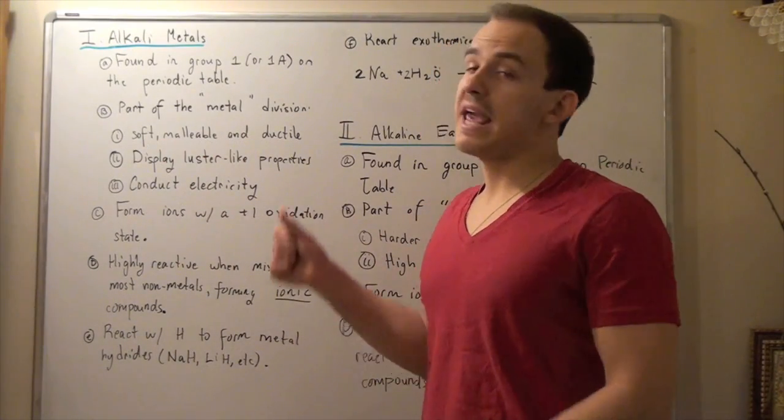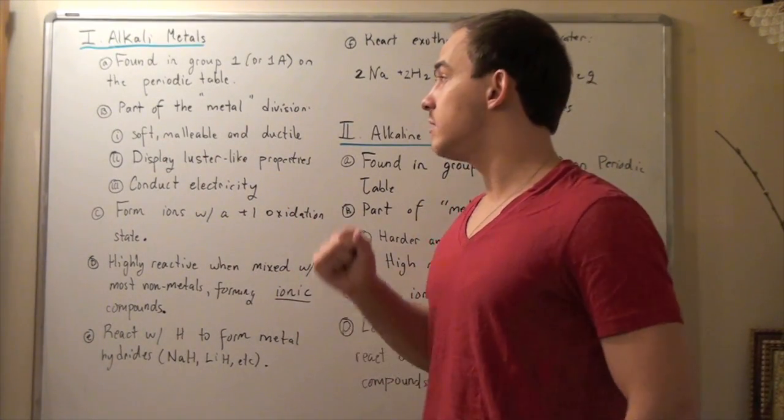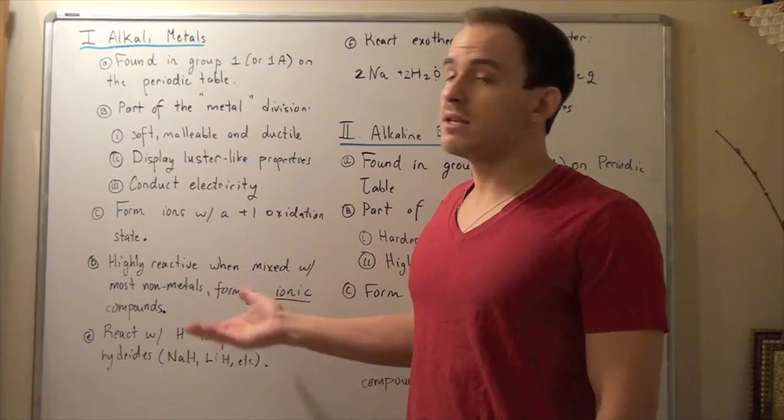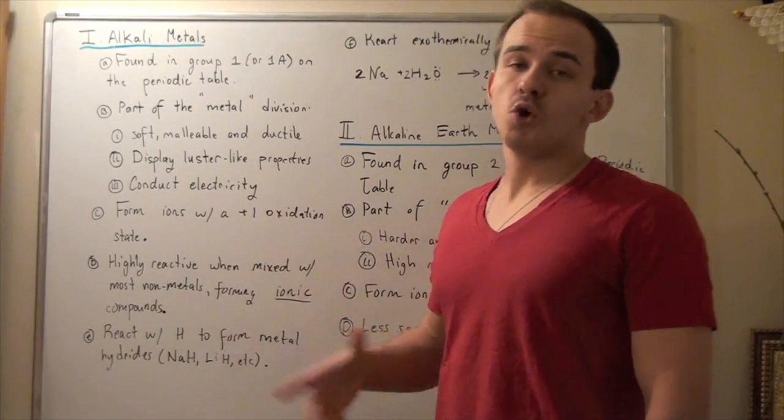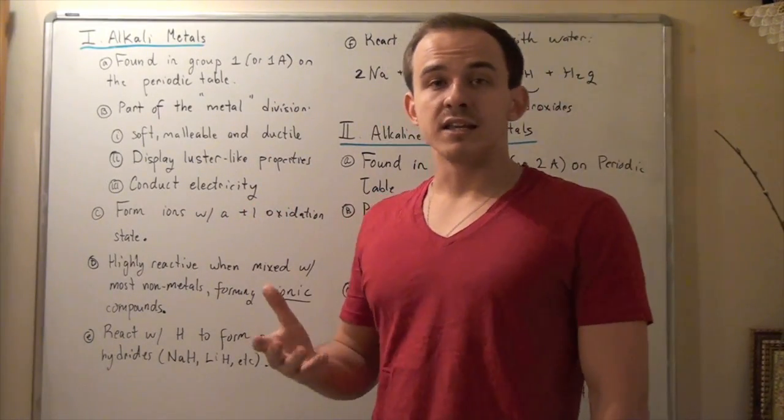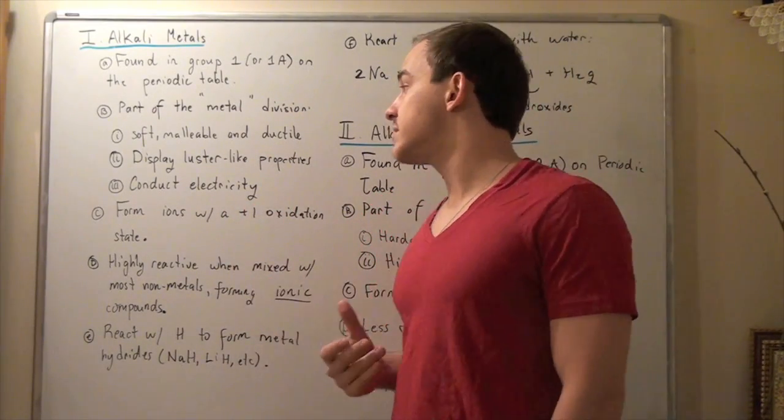Malleable simply means we can hammer them into thin sheets of metal. These guys also display luster-like properties, which simply means they're shiny. Metals are shiny, so that makes sense.